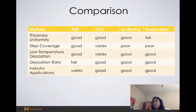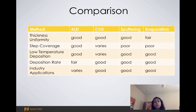This table shows a comparison of all the deposition processes. In ALD, the thickness uniformity is really good, the step coverage is good, and we can achieve low-temperature depositions — this is really good for most processes.